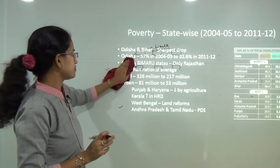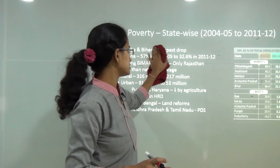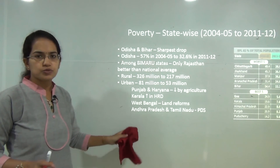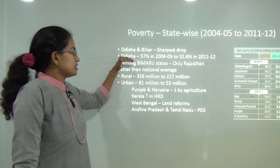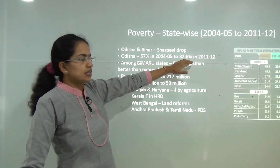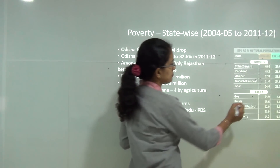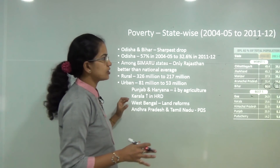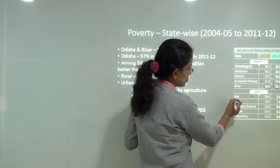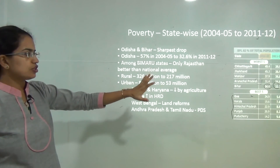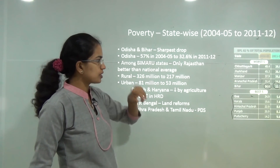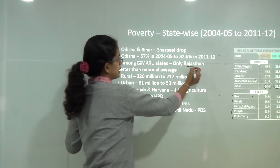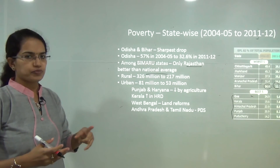Previously Odisha and Bihar were considered the worst states for poverty. However, from 2004 to 2012, Odisha saw poverty decrease from 57% to 32% — a 25-point decrease — and Bihar from 54% to 33%, a nearly 22% decline. The best-performing states are Goa, Kerala, Himachal Pradesh, Punjab and Pondicherry. The worst include Jharkhand, Manipur, Arunachal Pradesh and Bihar. Among BIMARU states, only Rajasthan is doing better than the national average.